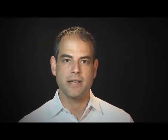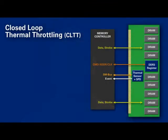There are several usage models and methods that thermal sensors are used to control DRAM temperature. Primarily, they're used to provide a closed-loop thermal algorithm for controlling temperature and maintaining data integrity, one example of which is closed-loop thermal throttling, or CLTT.